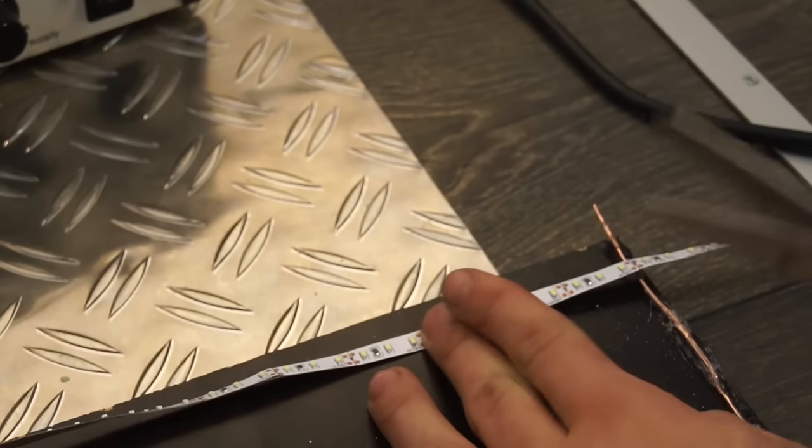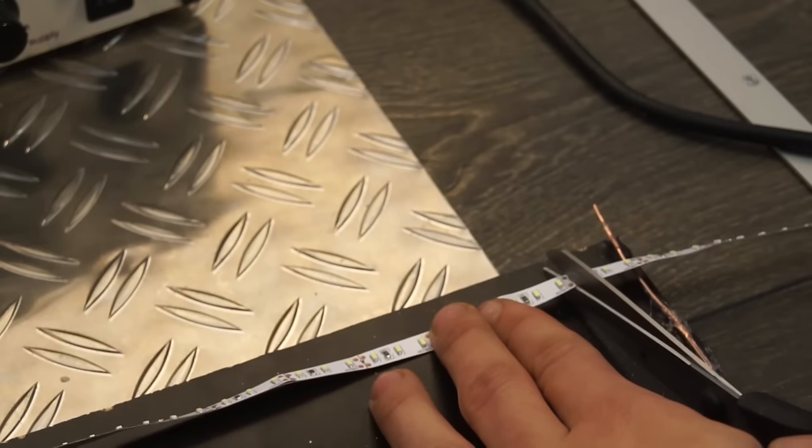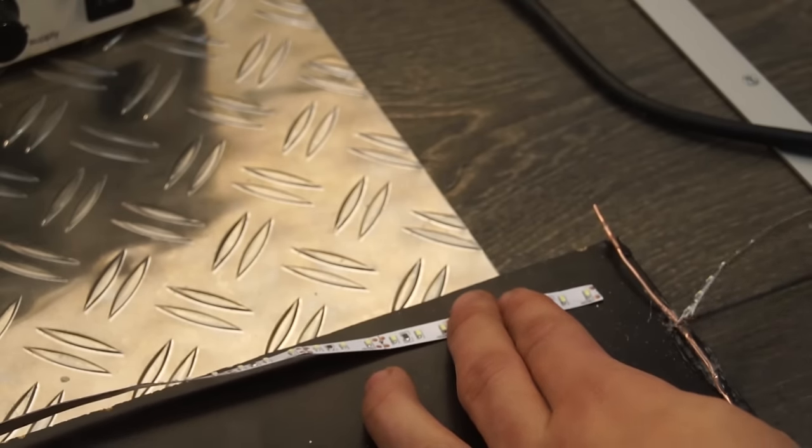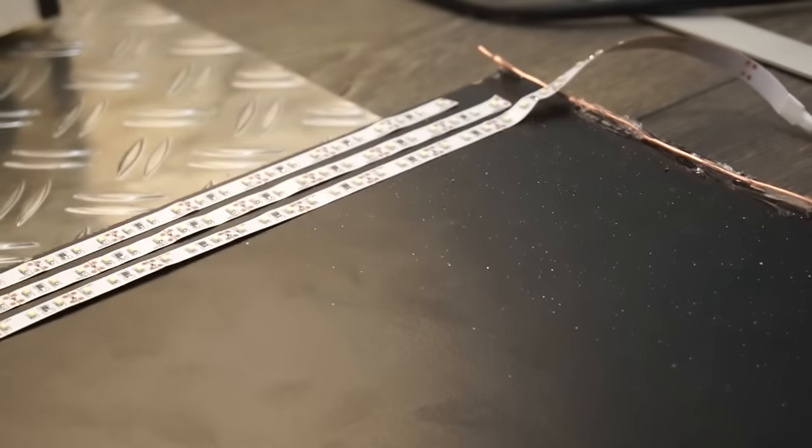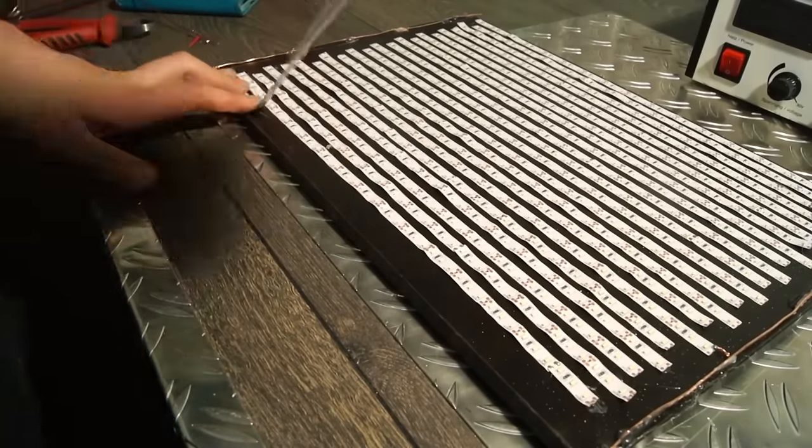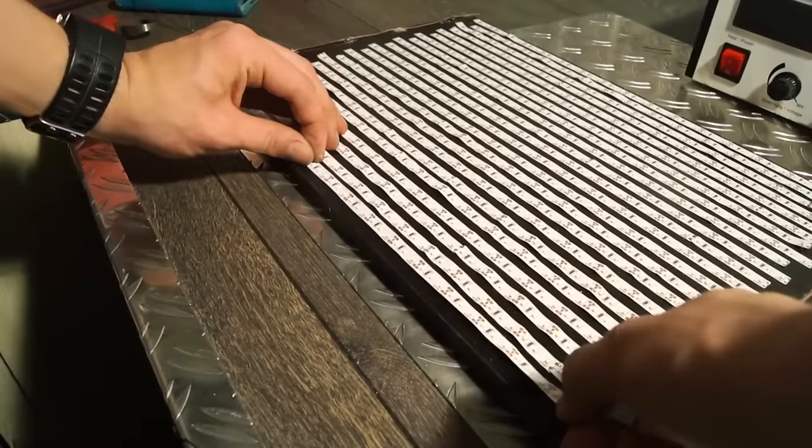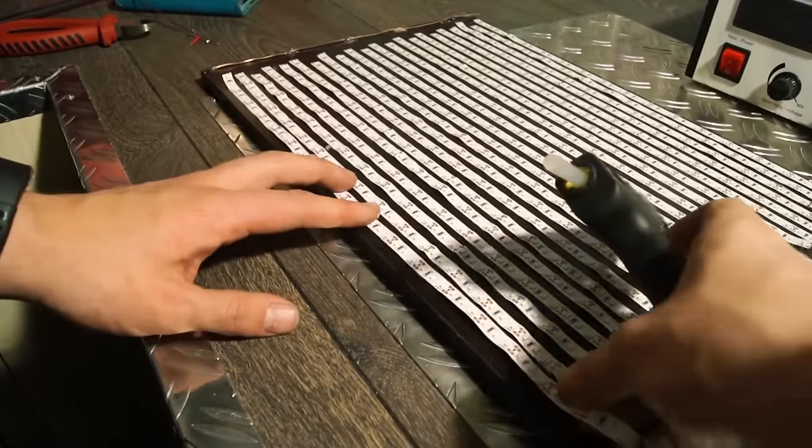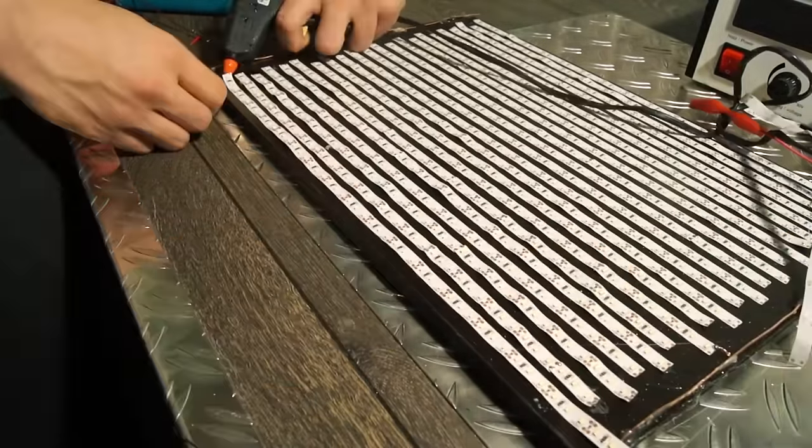Using the adhesive that comes on the back of the strips I attached them to the wood. Since the strips are wired with three diodes before a solder joint I made sure to offset the strips every other row so that their light would be spaced as evenly as possible. After a while I had placed all the LEDs in the right place. Some of them didn't stick good enough so I fixed it with some hot glue.